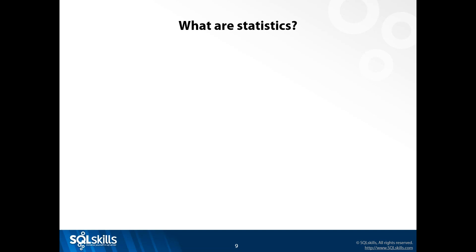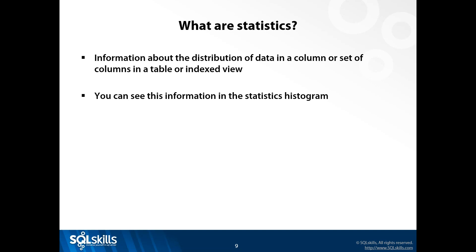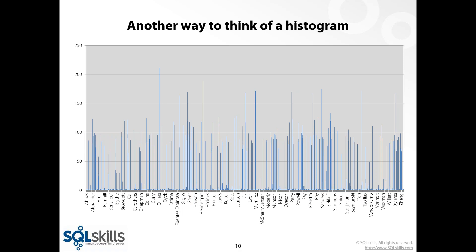When we talk about statistics in SQL Server, they are information about how data looks in a column or set of columns in a table or indexed view. The best way to understand this is to get a visual - you can see this information inside something called the histogram. Think of the histogram as the distribution of data for a column. Along the bottom are last names, and the blue lines indicate how many values are equal to each of those last names.